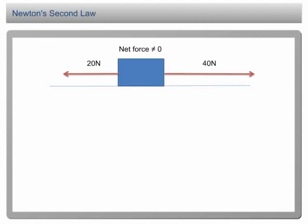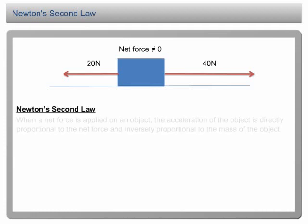Newton's second law. The conclusion from the previous slides is summarized in Newton's second law of motion. Newton's second law states that when a net force is applied on an object, the acceleration of the object is directly proportional to the net force and inversely proportional to the mass of the object.